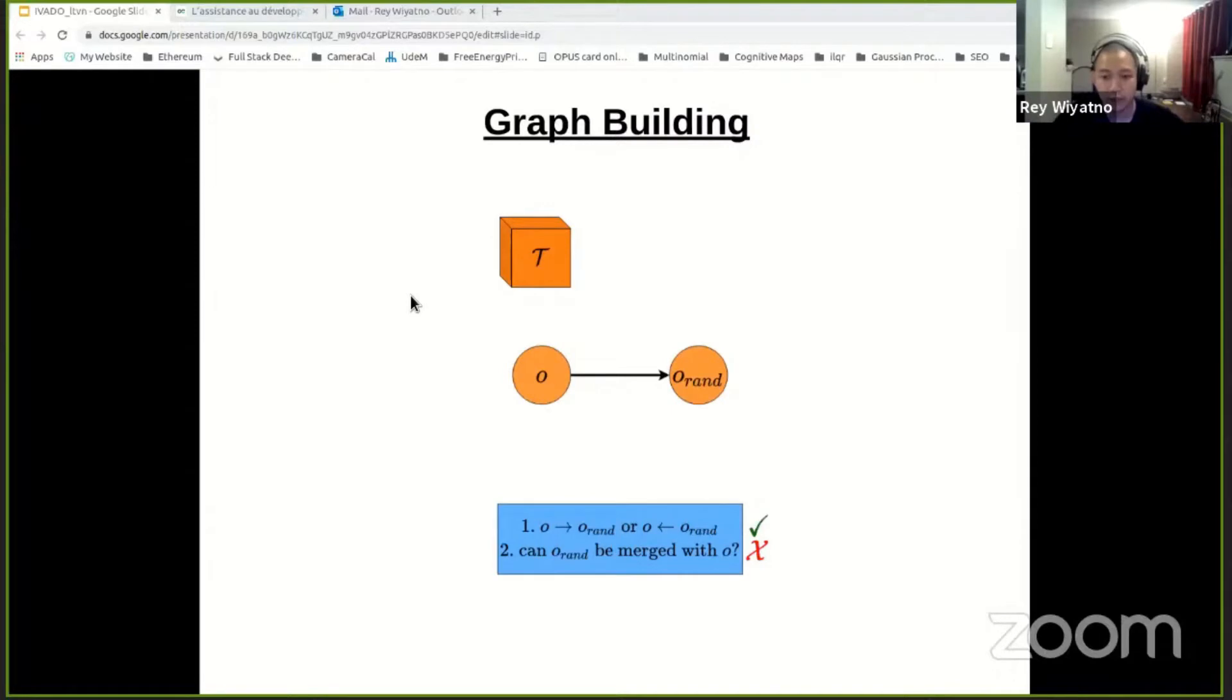If the model determined that the new node can be connected but not merged, we add it to the graph and connect it accordingly where we weigh the edge using the geodesic distance predicted by the model pose estimator. If the model determines that it can be merged with any of the existing nodes, then we remove O_RAN so it won't be resampled again in the future iterations. So it's about efficiency.